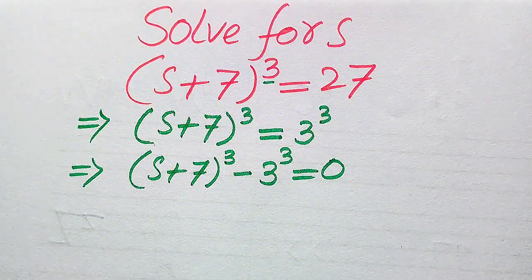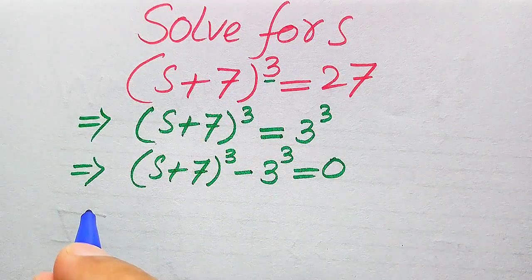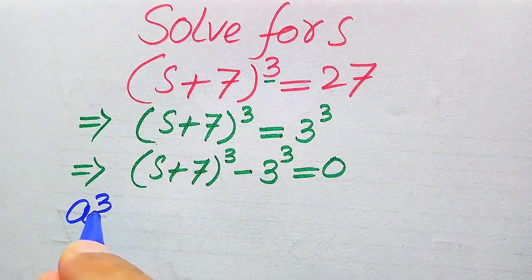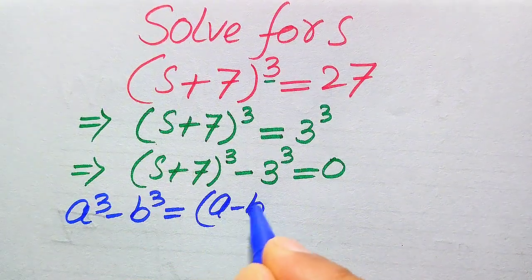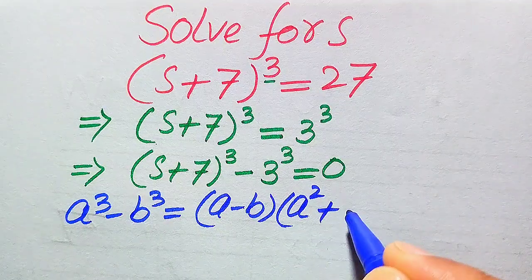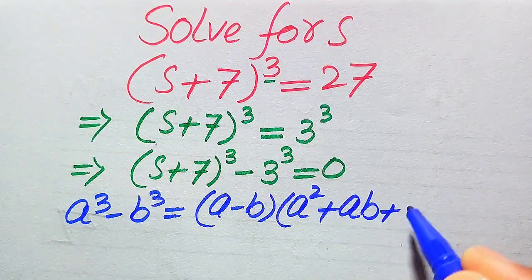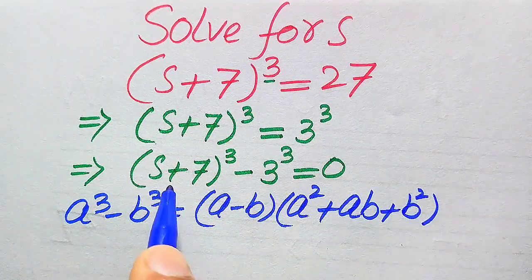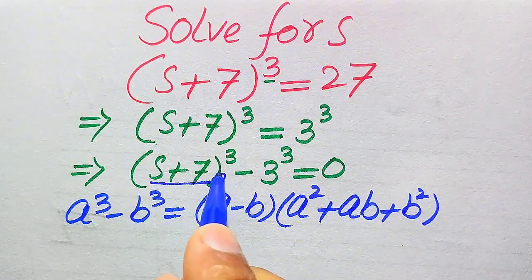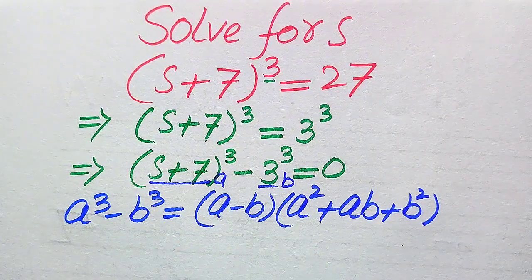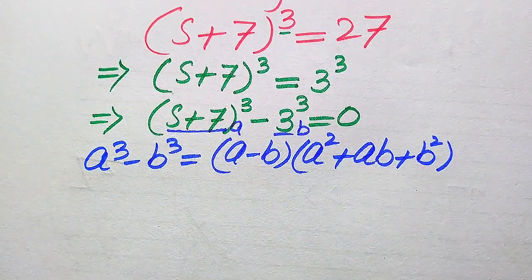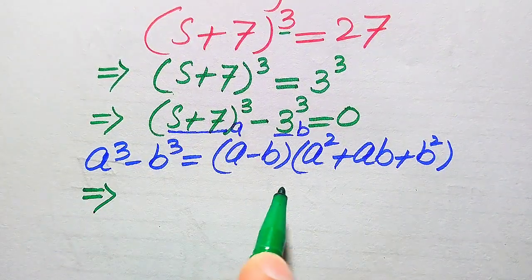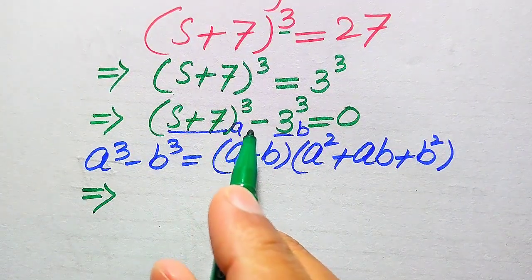In the next step, we use the difference of cubes formula: a³ − b³ = (a − b)(a² + ab + b²). Here, the base of the first term is our a, and the base of the second term is our b. We now substitute both values of a and b into this formula.